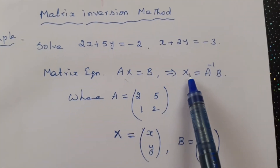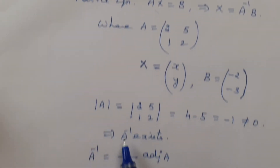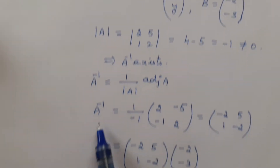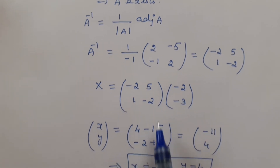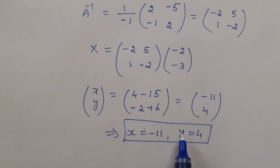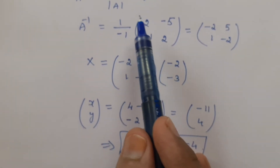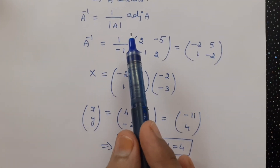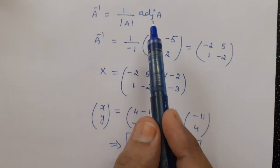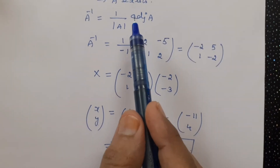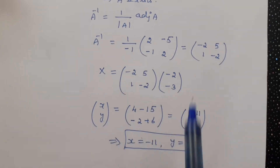Step 1: write the matrix equation. Step 2: find A inverse. Then find the product of A inverse and B to get the x and y values. The same procedure for a 3 cross 3 matrix also applies, where x, y, and z terms will come.